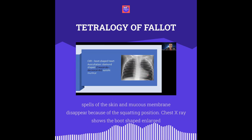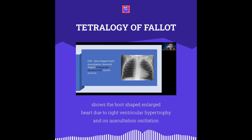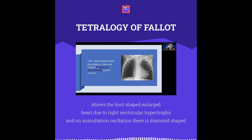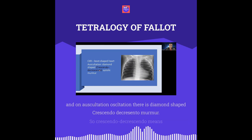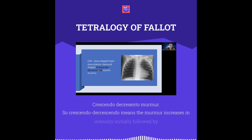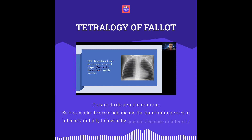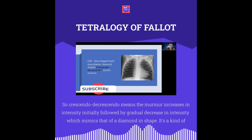Chest X-ray shows a boot-shaped enlarged heart, and right ventricular hypertrophy will be present. On auscultation, there is a diamond-shaped crescendo-decrescendo murmur — the murmur increases in intensity initially, followed by a gradual decrease, mimicking a diamond shape. It is a type of systolic murmur.